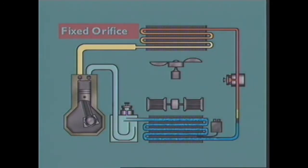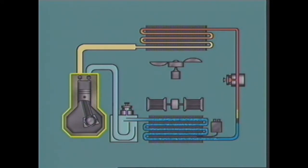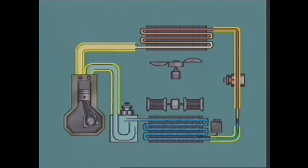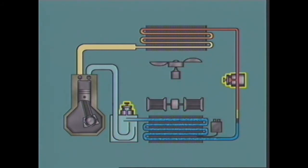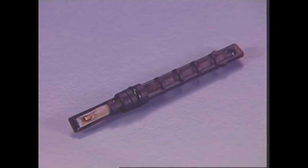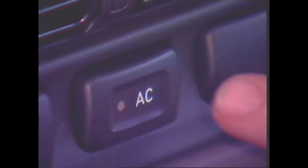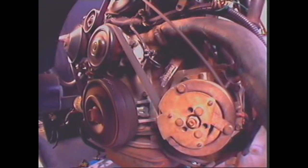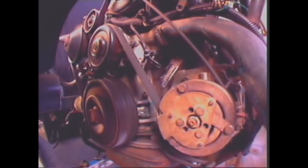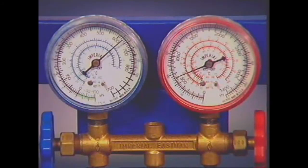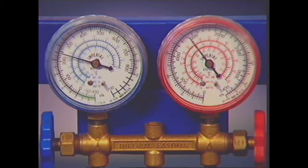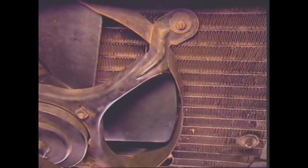In a fixed orifice tube system, the components necessary for operation are the condenser, the evaporator, the compressor, the orifice tube, the accumulator, connecting pipes and hoses, a thermostat, blower fans, and pressure switches. The orifice tube is located between the condenser and the evaporator and provides the restriction to flow necessary for system operation. When the air conditioning system is switched on, an electromagnetic clutch is energized on the compressor drive plate and the compressor is driven by the engine crankshaft. Vaporized refrigerant is drawn from the low-pressure side of the system and discharged as high-pressure, high-temperature vapor, flowing to the condenser where it is cooled.